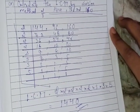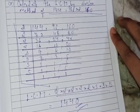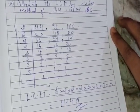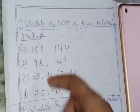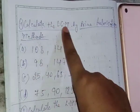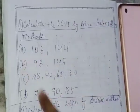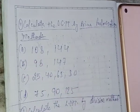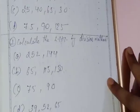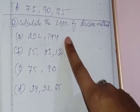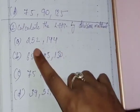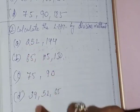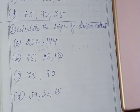Now I will give some questions to you to practice at home. The first set asks you to calculate the LCM by prime factorization method — there are 4 parts, A, B, C, D. You can take a screenshot and start doing it. The second question asks you to calculate the LCM by division method — again 4 parts, A, B, C, D. I hope you understood the video and my lecture.